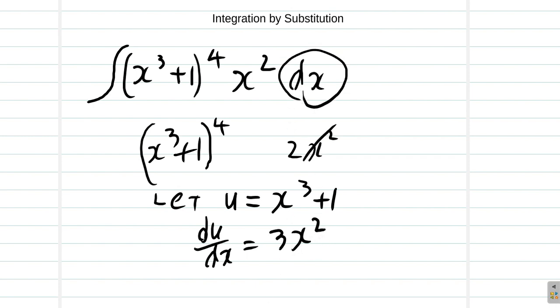What you have out here is dx. So if you make dx the subject, dx is equal to du over 3x squared. So at some point, you'll see that this is dx, but you're going to remove this dx and replace it with du over 3x squared.